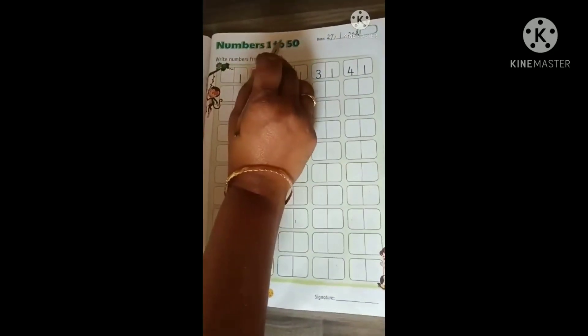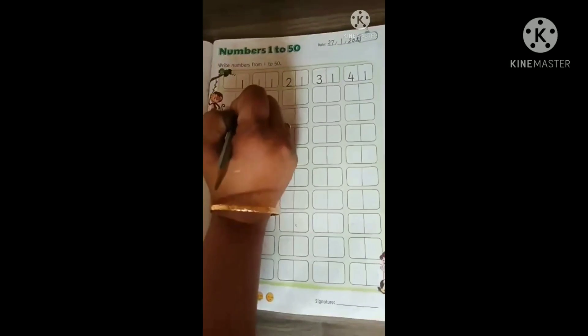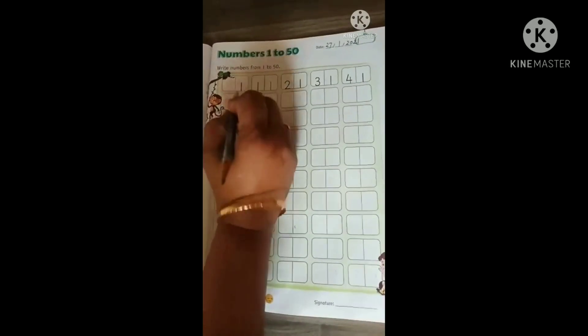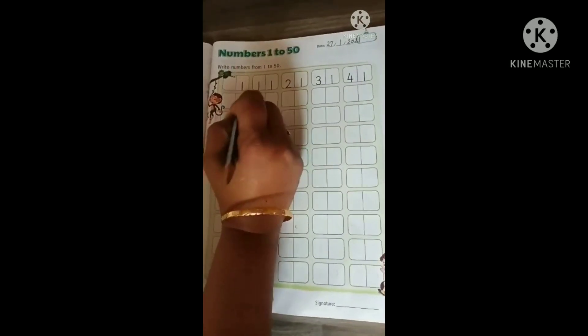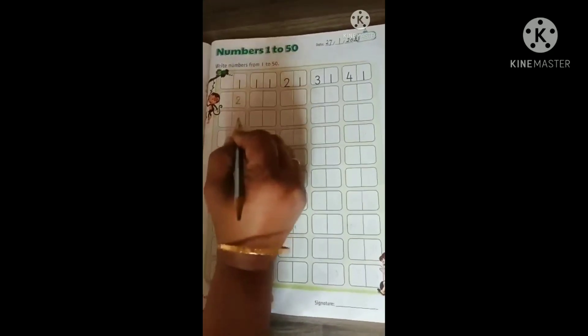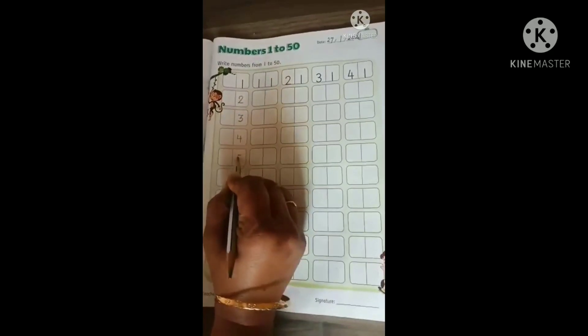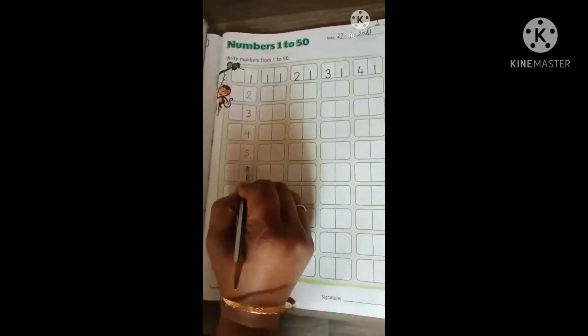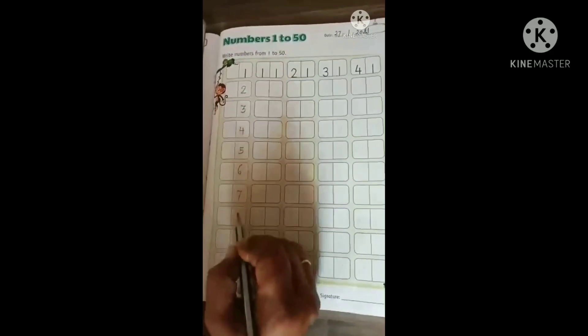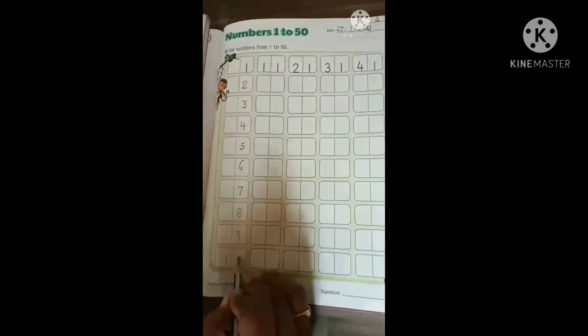Numbers 1 to 50. Come on kids. Listen to me and repeat and write with me. Okay. See this is 1, then 2, 3, 4, 5, 6, 7, 8, 9, 10.